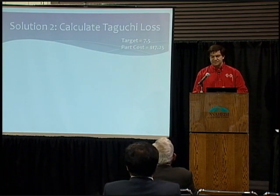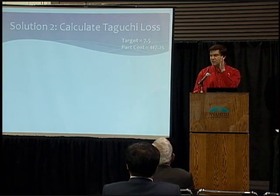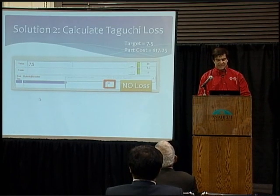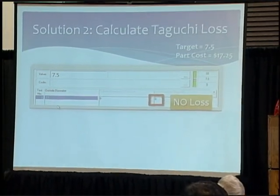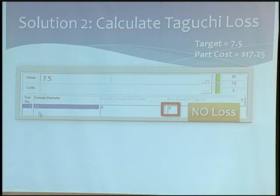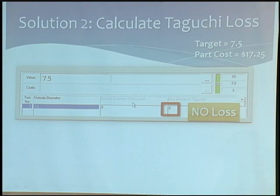With this example, our target is 7.5 and the part cost is $17.25. In this sample data entry window — this is just screenshots from our Infinity QS software — I've got my outside diameter at 7.5, so since that's running dead on target, I have no fallout whatsoever. The outside diameter out-of-spec count is zero, and the Taguchi loss is zero as well because I'm running right on target.